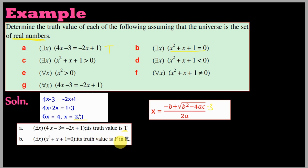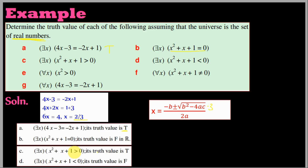There exists x such that x squared plus x plus 1 is greater than zero. Since x squared plus x plus 1 is always greater than zero for all real x (its discriminant is negative, meaning no real roots and the parabola is entirely above zero), this existential statement has truth value TRUE.